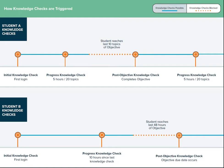Here is an example comparing the learning paths of two students and when they receive knowledge checks. After the initial knowledge check, they begin their learning. Student A spends 5 hours in ALEKS and learns about 20 topics — this triggers a progress knowledge check. Student B, on the other hand, has reached 10 hours since his last knowledge check but hasn't learned 20 topics yet; however, this will also trigger a progress knowledge check.